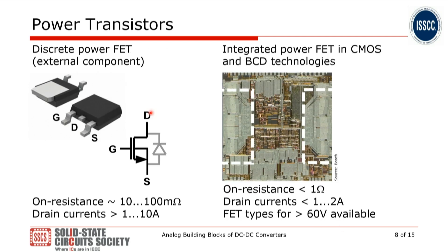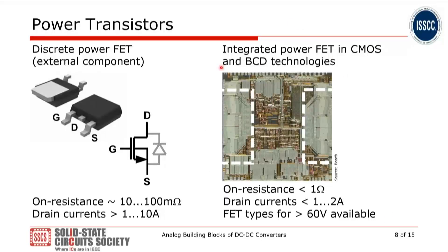Looking at the power transistors themselves: if the power level is large, we use a discrete power transistor, and a variety of devices are available. It is interesting to integrate the power stage together with all the analog and digital blocks on one IC, which allows on-resistances down to 100 milliohms on-chip with currents in the few-amp range. In addition, these power switches support voltage levels up to 100 volts — all integrated together.